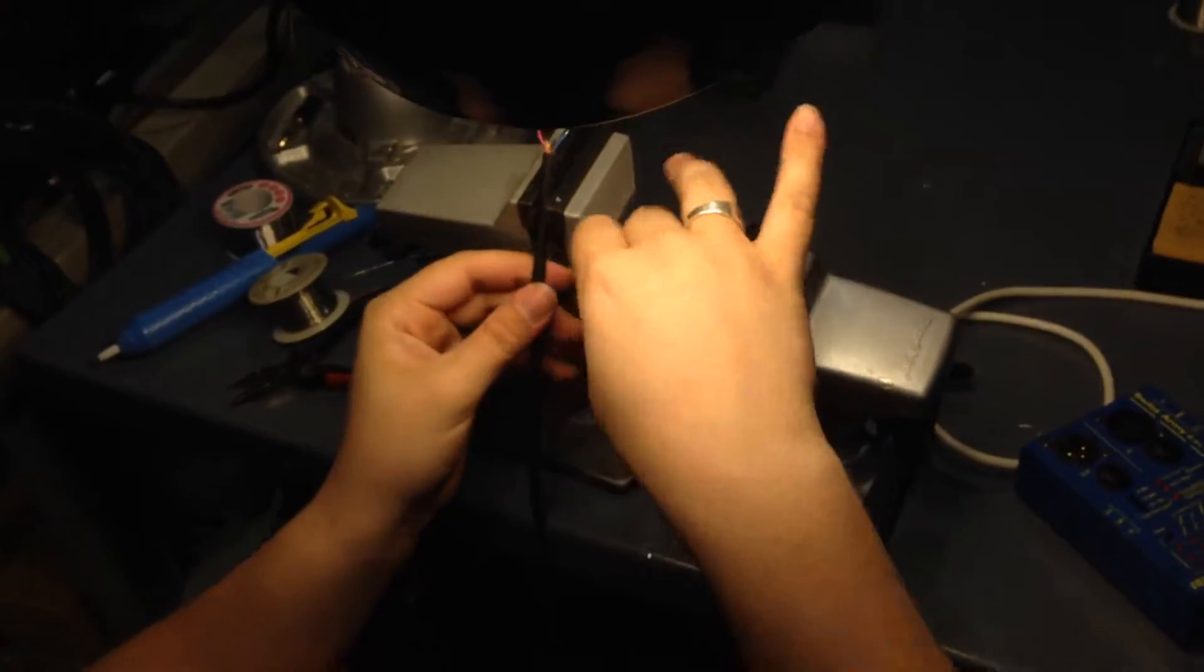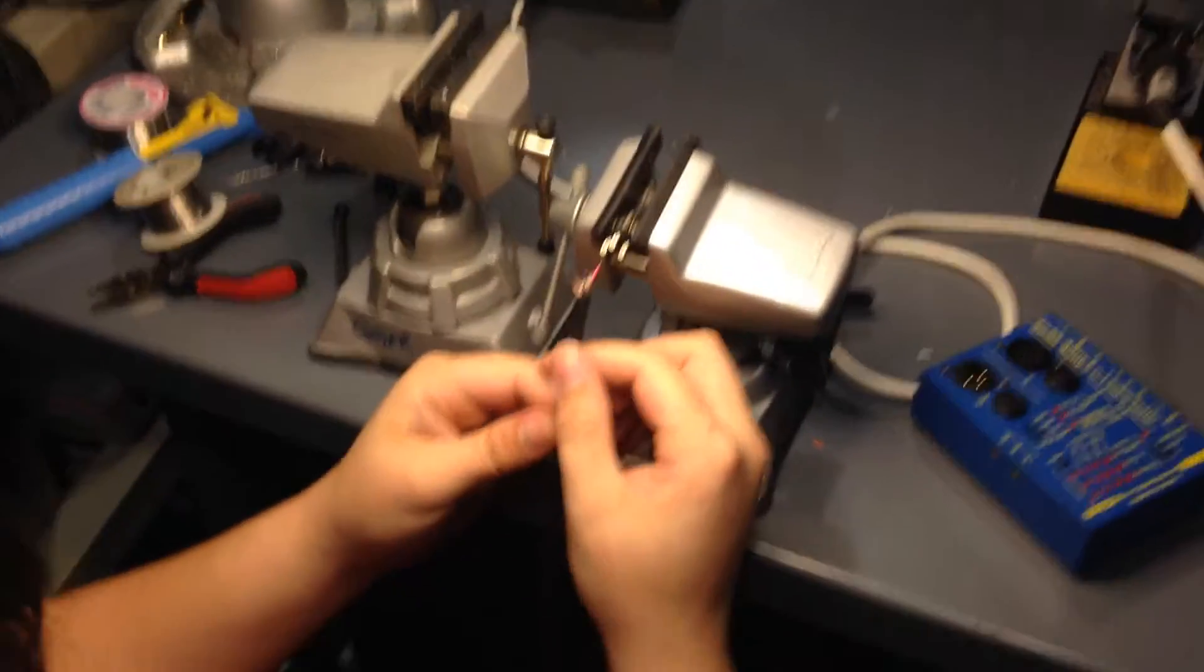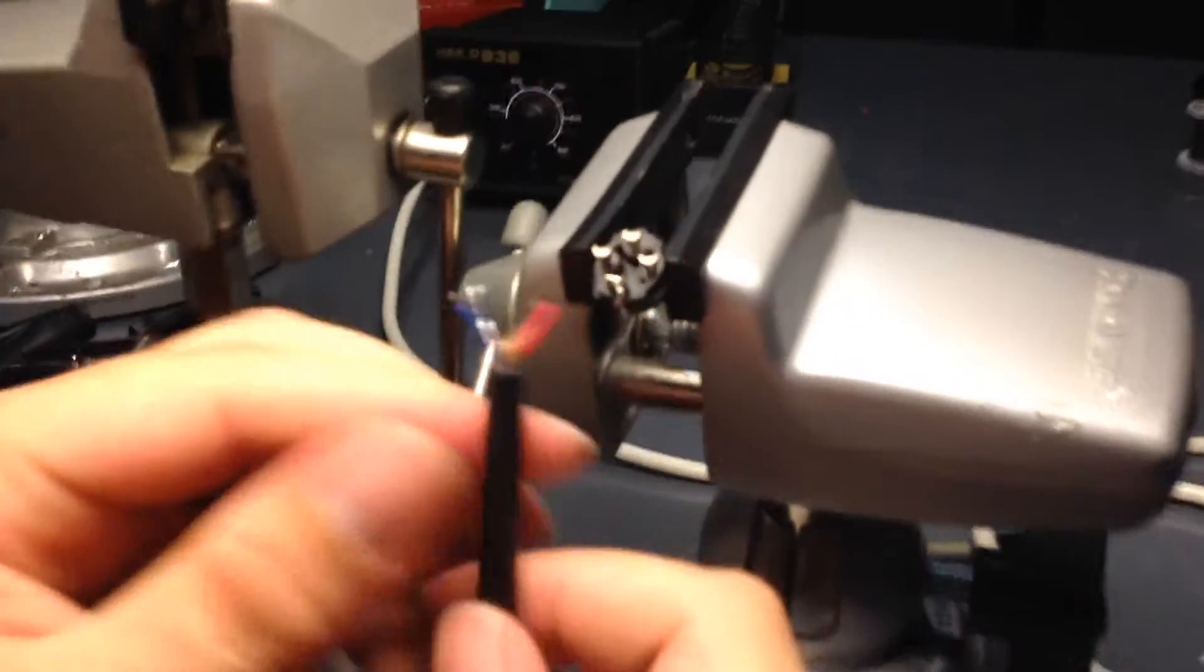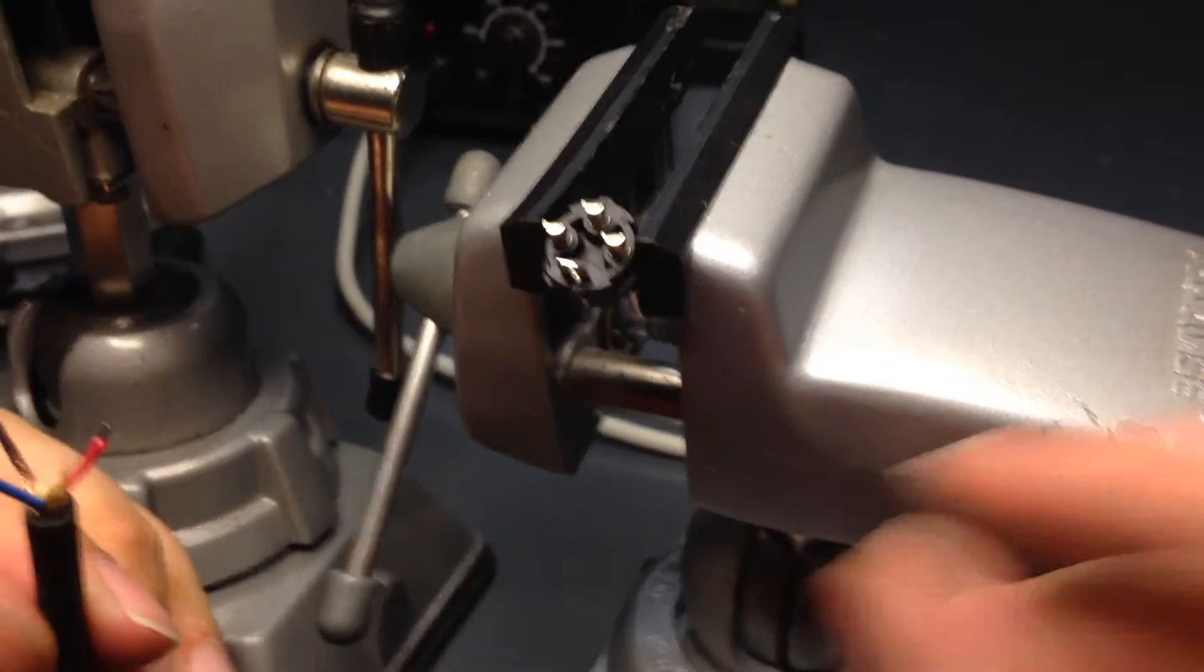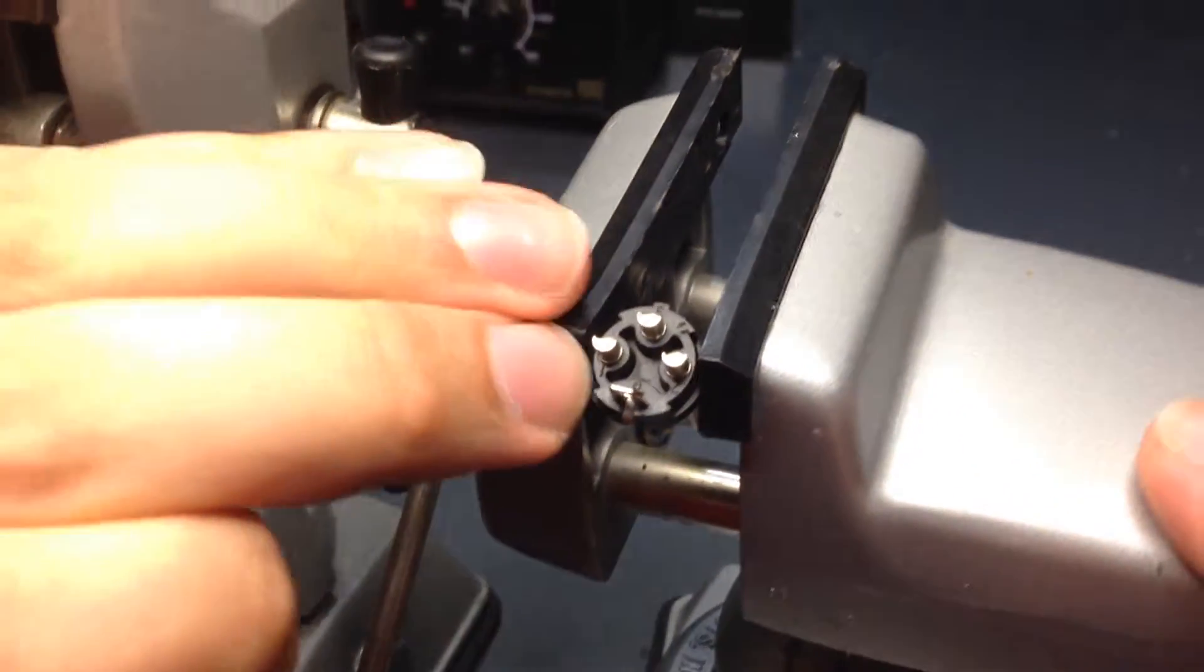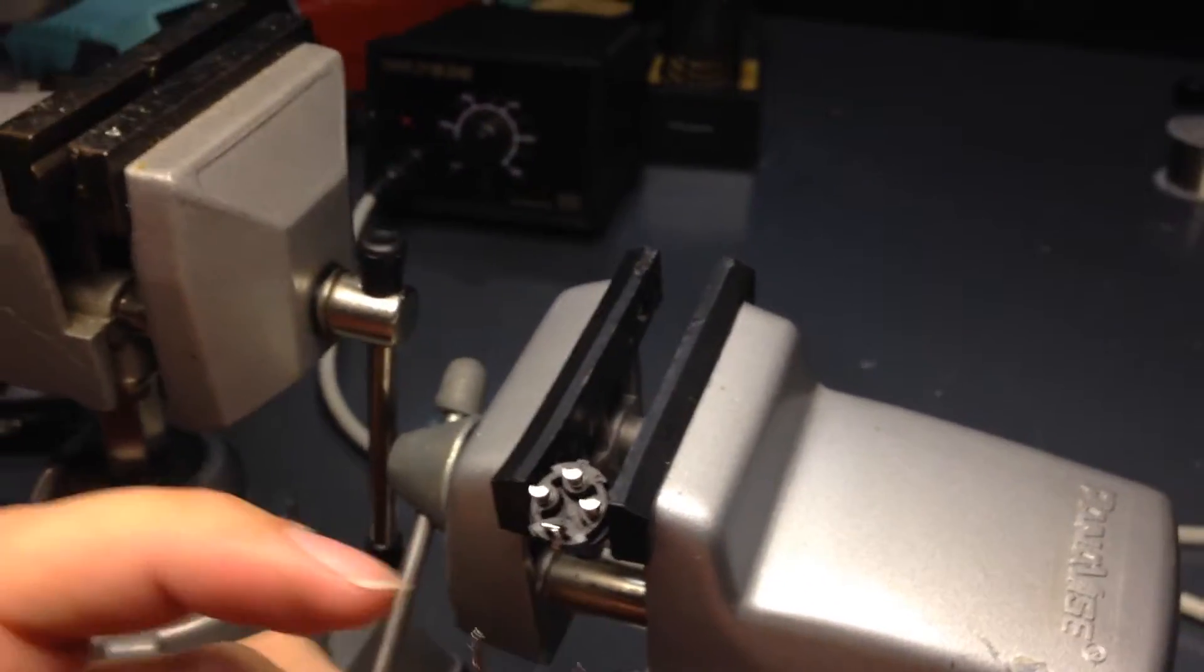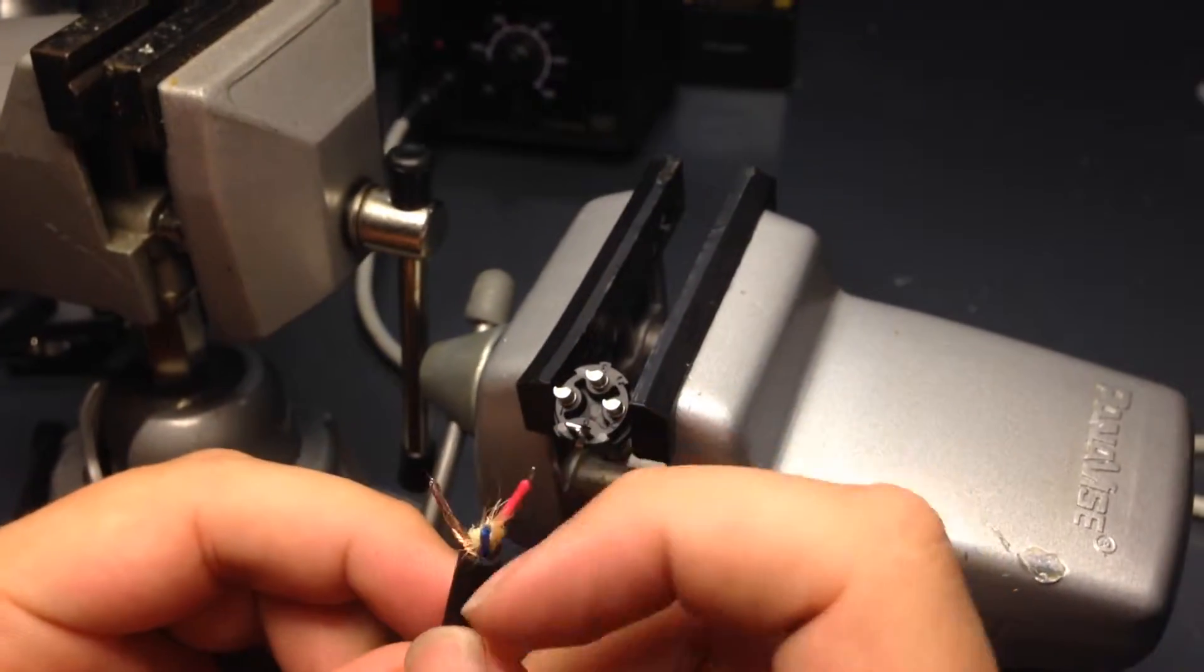So now on the other side of it there is actually a right and a wrong side of the XLR connection here. So you'll see the little pinouts here. I don't know if we can focus in on that. You probably won't be able to see it on the camera. There's going to be a one, a two, and a three. So one, two, three. One is always going to be your shield. Two is always going to be your hot. Three is always going to be your cold or neutral.